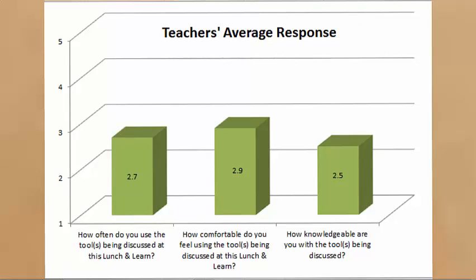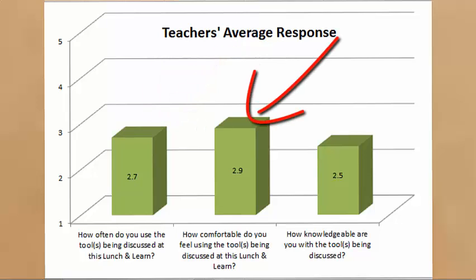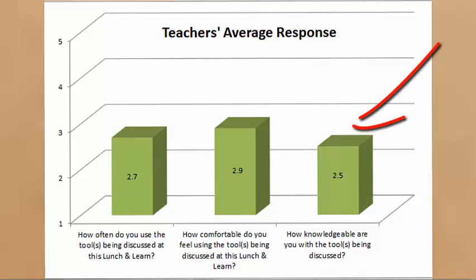I always share the responses from the pre-survey, so here's a little chart with the average responses. I received about 11 answers. When I asked how often you're using Schoology analytics or the student completion rules, the average response was 2.7. How comfortable you feel — average response was 2.9. And how knowledgeable are you with the analytics and student completion rules — average response was 2.5. I share these so you know why I'm doing this lunch and learn and you can gauge where you fall relative to your peers.